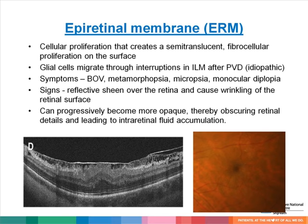Epiretinal membrane is a cellular proliferation that creates a semi-translucent fibrocellular proliferation on the retinal surface. Glial cells migrate through interruptions in the ILM after a PVD occurs. Patients may complain of blurred vision, wavy lines, objects appearing small, or monocular double vision. Signs include a reflective sheen across the retina causing wrinkling of the retinal surface visible on slit-lamp examination. The ERM can progressively become more opaque, obscuring retinal details, and may lead to intraretinal fluid accumulation.